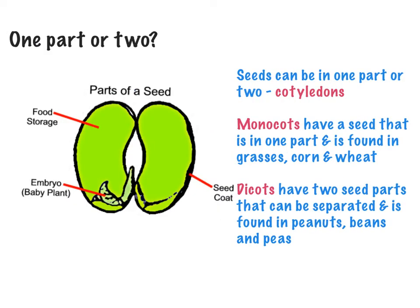One of the key terms we have is called a cotyledon. A cotyledon is the name for a seed part — one part or two parts. Two parts mean dicot — 'di' means two, 'mono' means one. So in this part of the seed, like a bean seed or a peanut, I can split it in half very easily. This part is full of food, here is the developing plant, and the seed coating is on the outside. The number of seed cotyledons will decide what sort of plant we get.